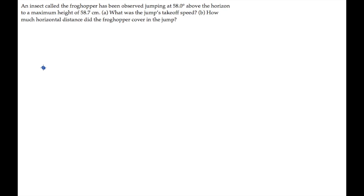The insect in this problem jumps into the air at some unknown speed, moving as a projectile. Here's its initial velocity, v0. We know the direction of this velocity vector, theta0, is 58 degrees, but we don't know the magnitude of it.